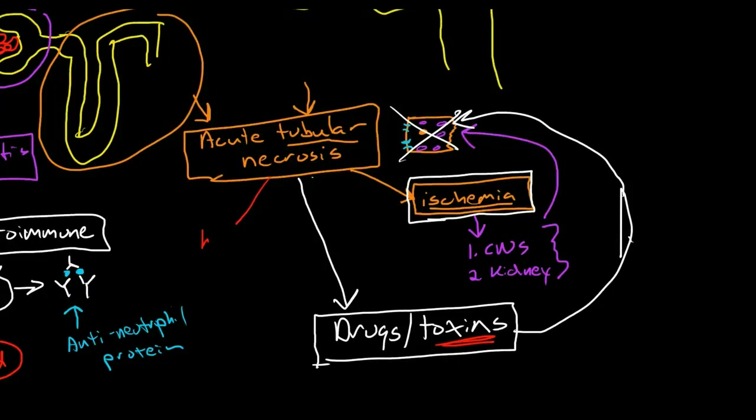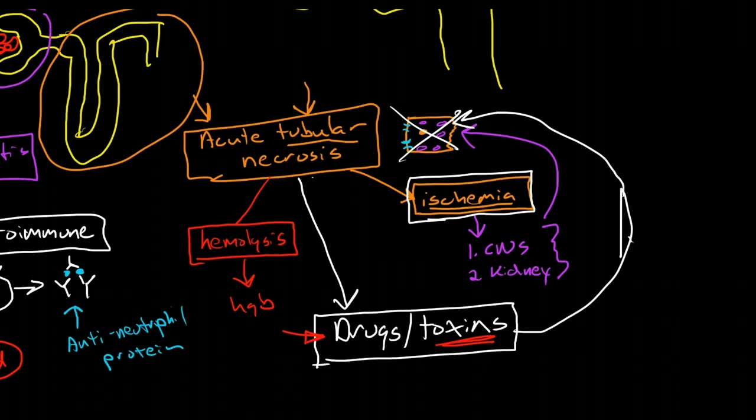A third type of acute tubular necrosis is due to hemolysis. Hemolysis can cause direct injury to the epithelial cells just like drugs and toxins, because hemoglobin breakdown products — particularly heme — can be directly toxic to the tubular epithelial cells. Additionally, hemolysis can cause glomerulonephritis, because breakdown products of red blood cells and the coagulation stimulated by red blood cell rupture can cause a microangiopathy and damage the glomerulus, so hemolysis can cause intra-renal failure affecting both the glomerulus and the tubules.